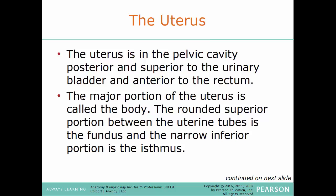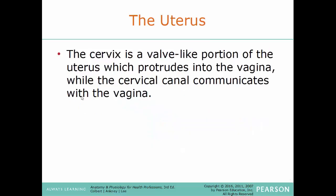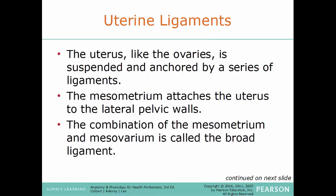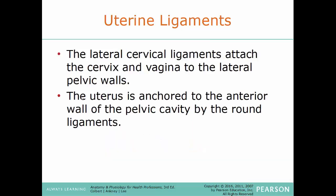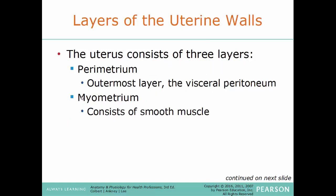The uterus is in the pelvic cavity, posterior and superior to the urinary bladder and anterior to the rectum. The major portion is called the body; the rounded superior portion between the uterine tubes is called the fundus; the inferior narrow portion is the isthmus; and the cervix is a valve-like portion that protrudes into the vagina, while the cervical canal communicates with the vagina. The uterus is suspended by several ligaments: the mesometrium attaches it to the lateral pelvic wall, and together with the mesovarium forms the broad ligament. The round ligament anchors the uterus to the anterior pelvic wall.